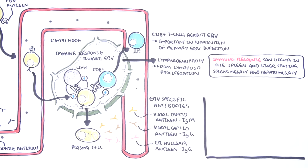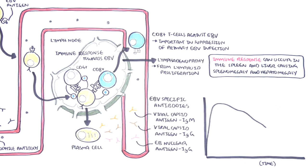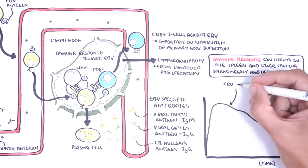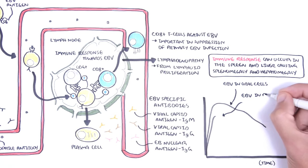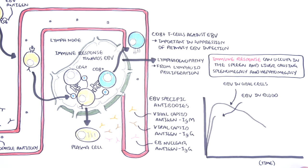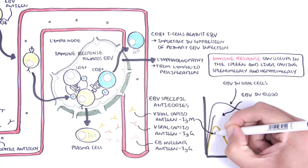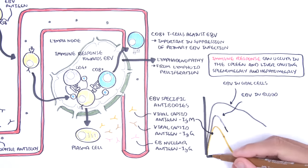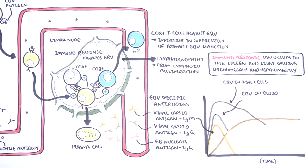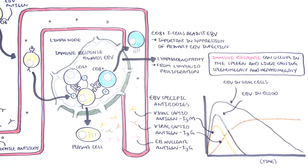It is important to understand the antibody response to Epstein-Barr virus and what they mean. Here is a graph with time on the x-axis and concentration on the y-axis. The Epstein-Barr virus infection begins in the oropharynx with infection of the tonsils, then can enter circulation. The first antibody produced is viral capsid antigen IgM, which is a marker of a current Epstein-Barr virus infection. This is followed by viral capsid antigen IgG. When both IgM and IgG are produced, Epstein-Barr virus levels drop.